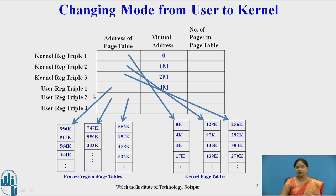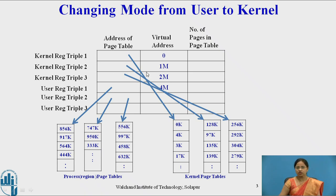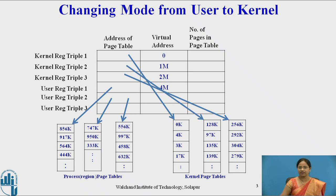The user register triples start from 4M onwards. So virtual addresses 0 to 4M-1 are for kernel mode, and 4M onwards are for user mode. The kernel register triple points to the kernel page tables, which contain page tables for user data, text, and the three regions of kernel data, text, and stack. The user register triple points to page tables associated with the user process.